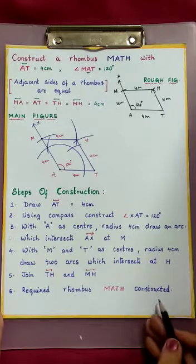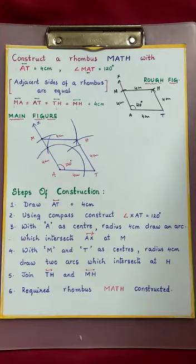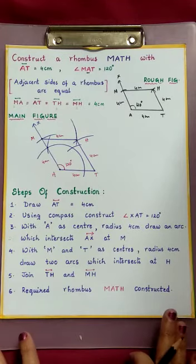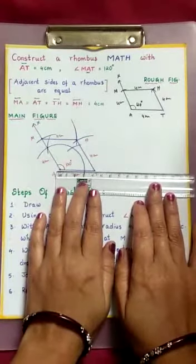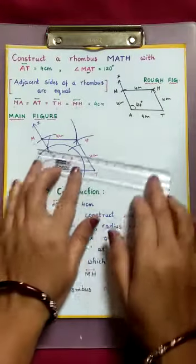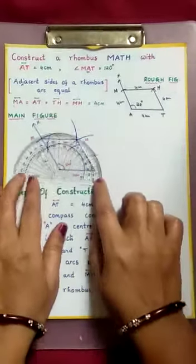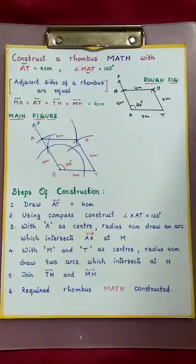So required rhombus MATH is constructed. See how easy, children — rhombus, since all the sides are equal, easily we constructed. I hope you understand the construction of parallelogram and rhombus. Practice the same sums and construct accurate figures. Don't do any adjustments in the figure, and immediately after construction, measure and check. AT 4 cm and MA also 4 cm. Measure the angle also using a protractor — exactly we have 120 degrees. I hope you understand. With this, I conclude my class. Do the two sums I explained as assignment. Thank you.